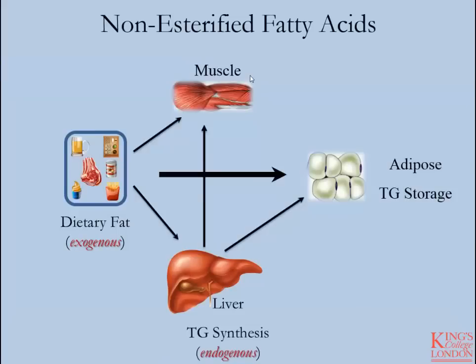Generally, this is how non-esterified fatty acid transport from adipocytes to tissues requiring lipid for energy works in conjunction with the endogenous and exogenous pathways. The exogenous pathway involves dietary lipid entering, with the bulk of this dietary lipid entering adipocytes for triglyceride storage. At this time there will be very limited — if any — release of NEFA from the adipocyte because of high insulin levels. Some dietary fat will be taken up by muscle for its energy needs and some will be taken up by the liver.